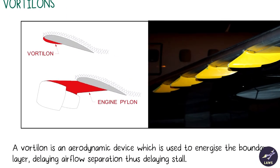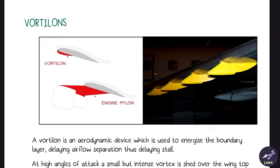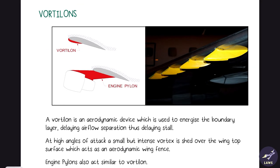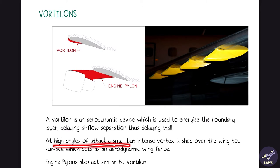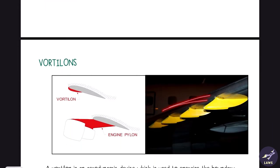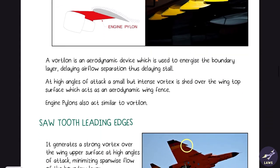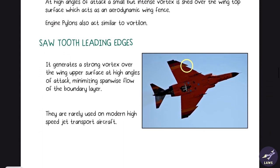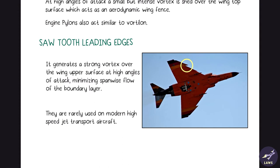Vortilons are located below the leading edge — as seen on the Boeing 737. They are used to energize the boundary layer and generate small vortices. At high angles of attack, they act as an aerodynamic wing fence, so you don't need physical wing fences to stop spanwise flow. They also reduce drag to a greater extent.